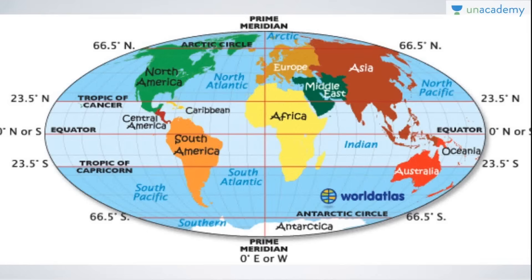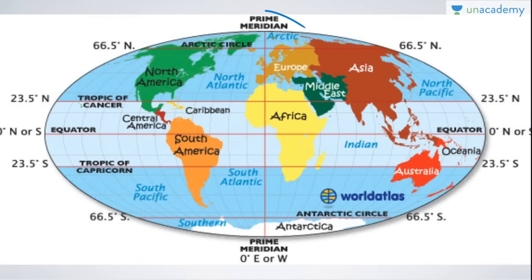As you can see on the map, India is only crossed by the Tropic of Cancer and nothing else. The Middle East is also crossed by the Tropic of Cancer. The only continent crossed by all four lines — Prime Meridian, Tropic of Cancer, Tropic of Capricorn, and Equator — is Africa.